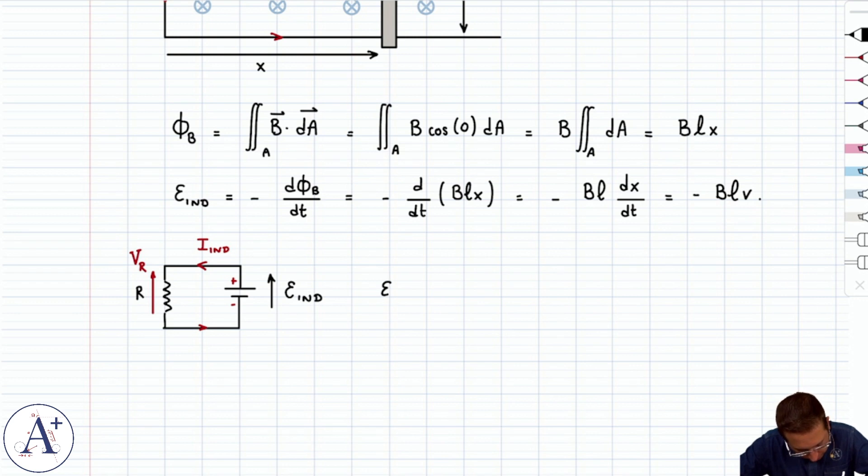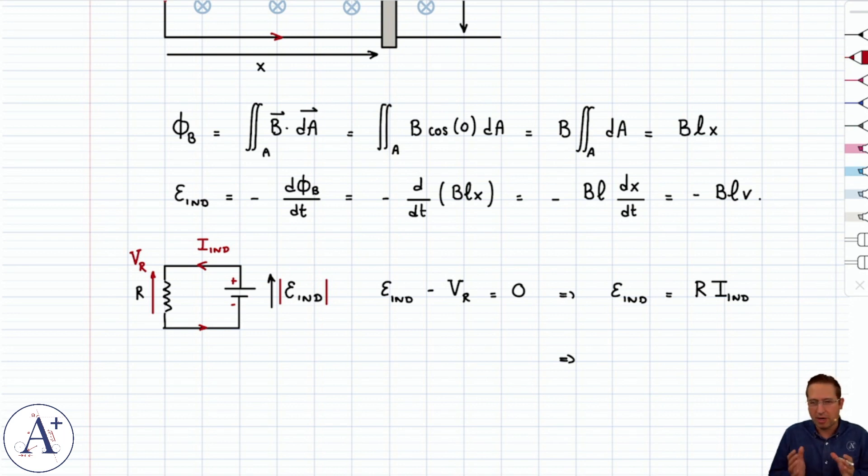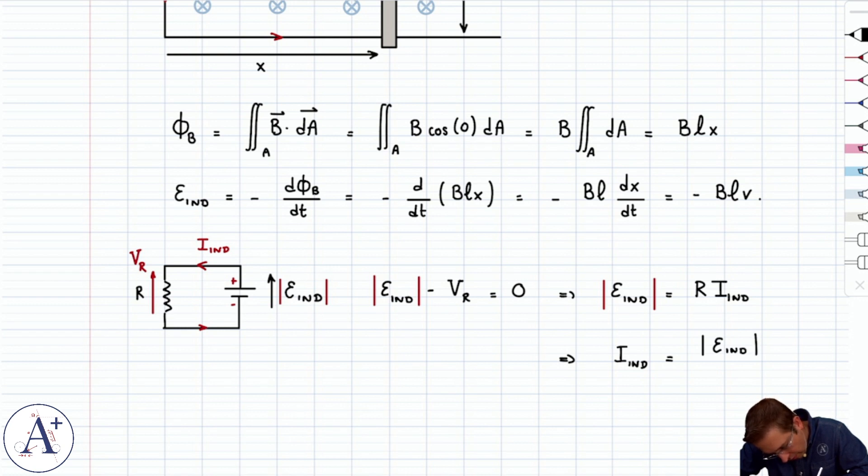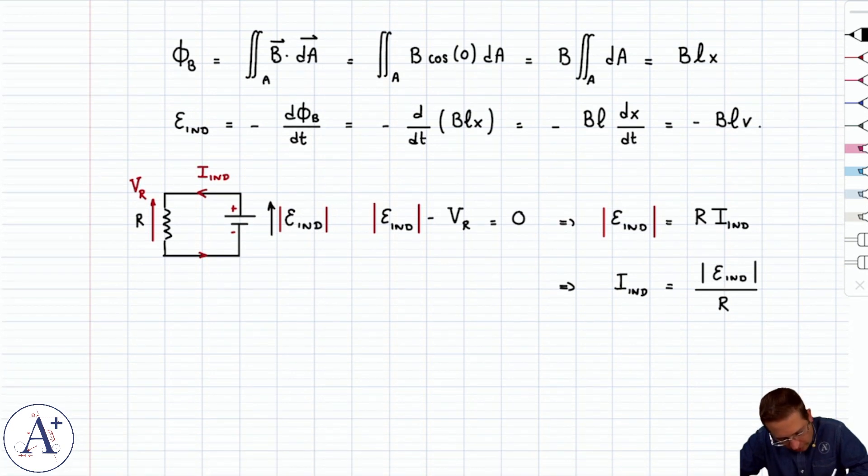The loop law says that epsilon induced minus VR is equal to zero. In other words, that epsilon induced is equal to VR, which is R times I induced by Ohm's law. And really what we should do to be thorough here, we should put absolute values around epsilon induced, because we do have this minus sign here. And we've mentioned it before, the minus sign doesn't really tell you much. It could be tied to the direction of the induced current, but really what you care about is the magnitude of epsilon induced most of the time. And so your induced current, which you already know flows counterclockwise, is going to be absolute value of epsilon induced divided by R. And you get a very classic result, which is that I induced is B L V divided by R.